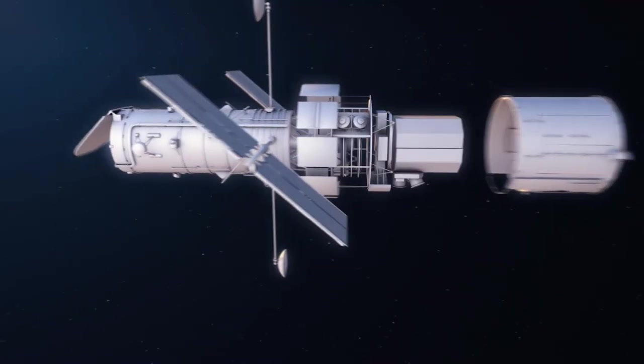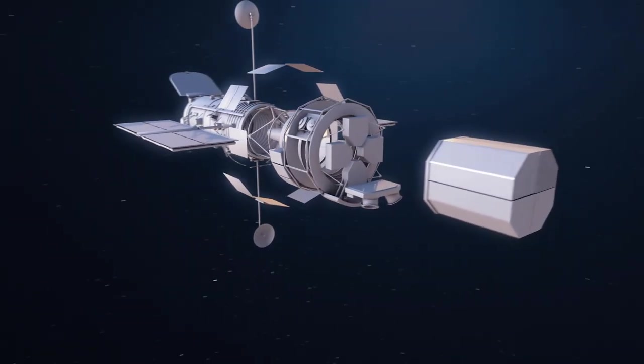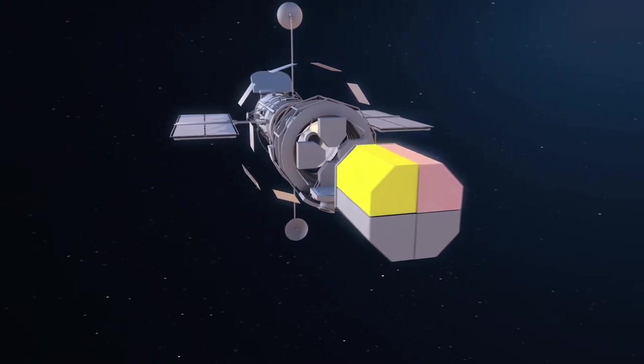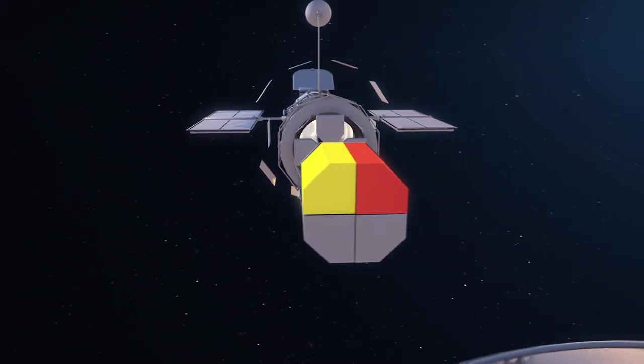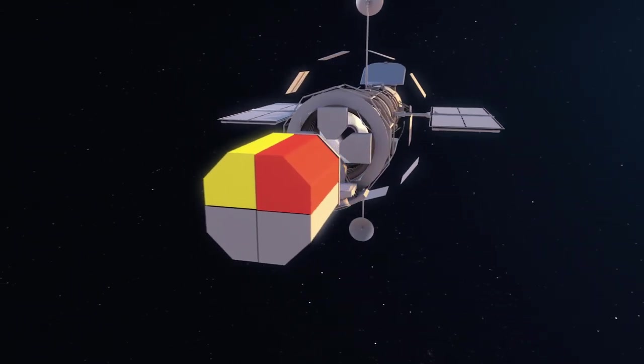Hubble is equipped with two spectrographs: the Space Telescope Imaging Spectrograph, which was installed on the telescope in 1997, and the Cosmic Origins Spectrograph, which was installed in 2009.